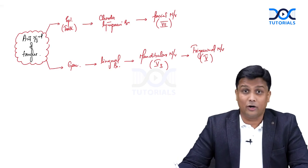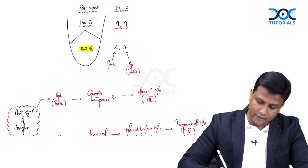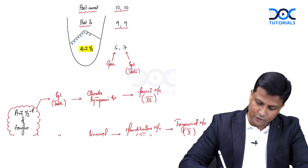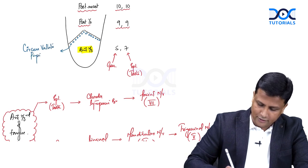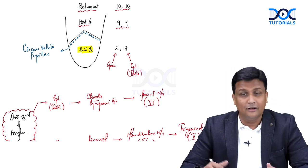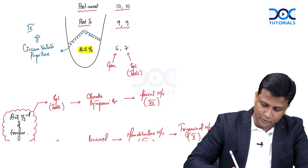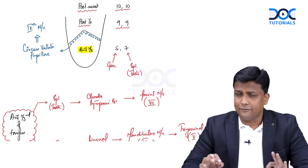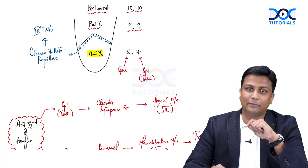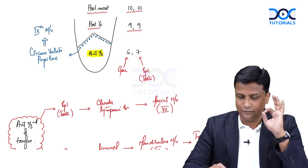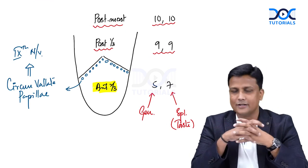Now, one exception in the anterior two-thirds: you will find the circumvallate papillae there. Many students get confused because the circumvallate papillae are located in the anterior two-thirds, so they assume taste from them should be carried by the seventh nerve. But no — even from the circumvallate papillae, sensation is carried by the ninth nerve, the glossopharyngeal nerve. So from the anterior two-thirds, all taste is carried by the seventh nerve except from the circumvallate papillae, which is carried by the ninth nerve.